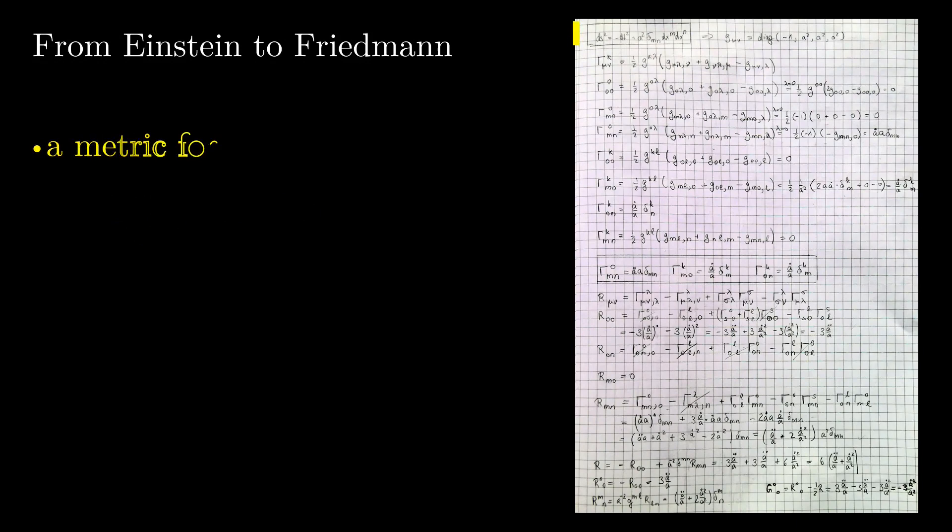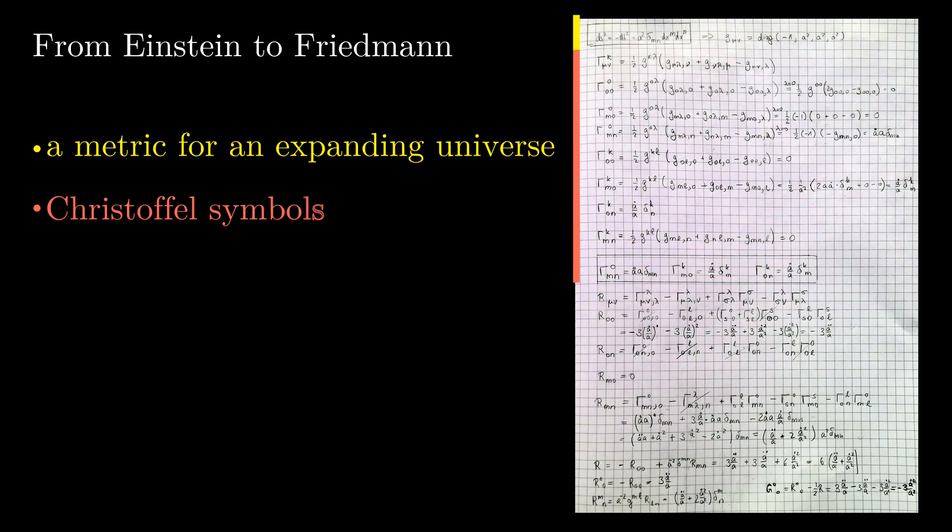The starting point is the metric of the spacetime for an expanding universe. From there, the Christoffel symbols are computed. They can be used for the calculation of the curvature that is here expressed by components of the Ricci tensor. These components are finally combined to the Einstein tensor, which represents the left-hand side of Einstein's field equations.